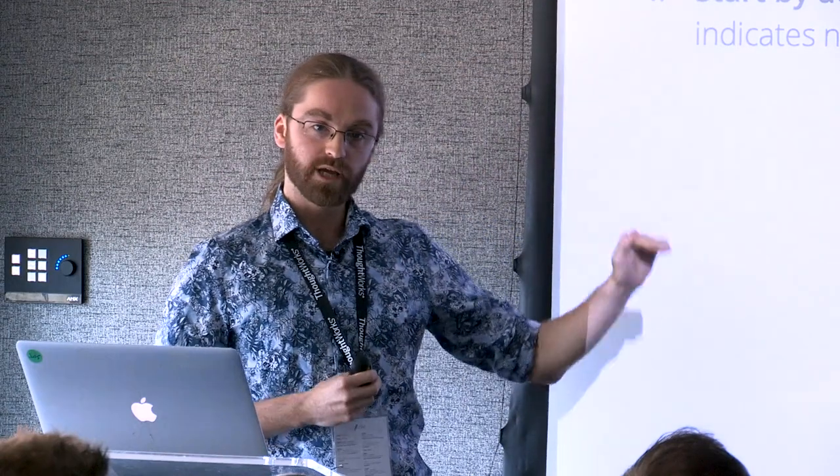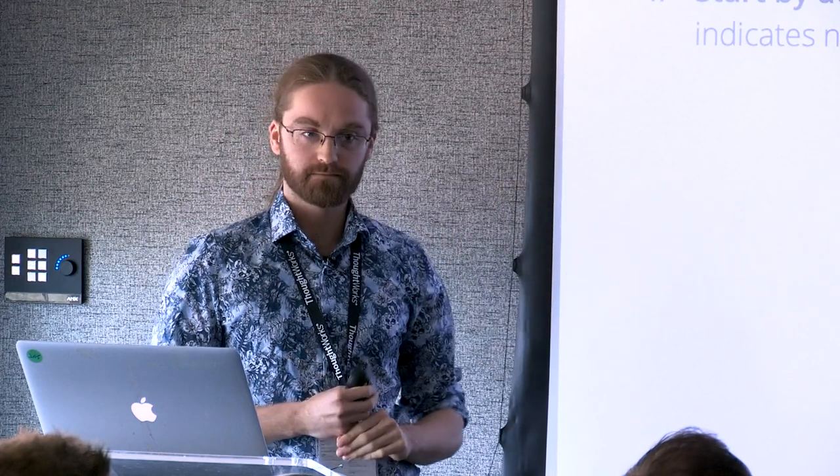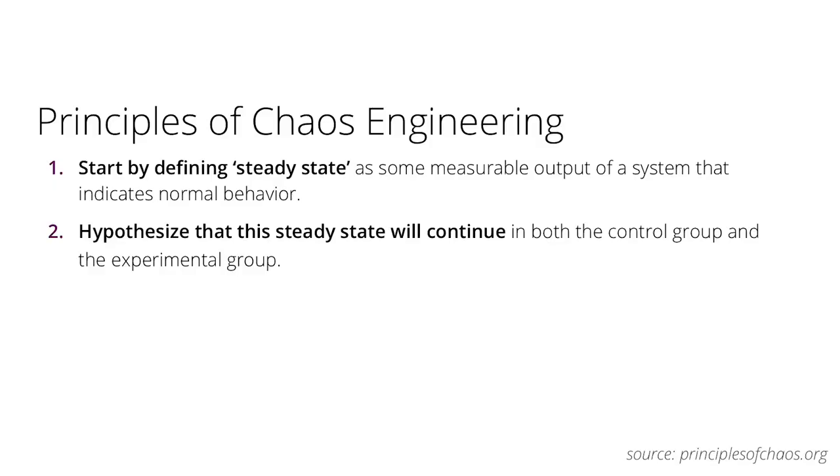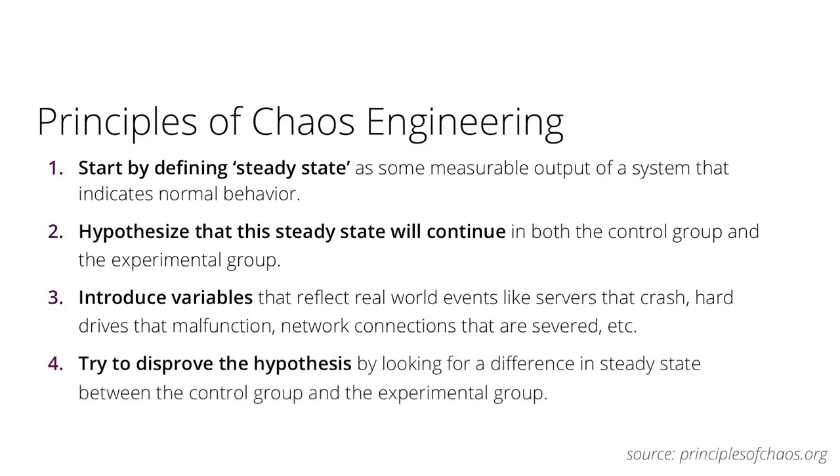They're saying if our system is working correctly, your error count will be below 1%. If it's above that, we are no longer in our steady state—we have failed to be a working system. Then you make a hypothesis: if we have built a resilient system, then whatever we throw at it, it's going to stay in that steady state. Then they start introducing variables—some people call these chaos variables. They're going to start turning things off randomly, injecting network delays, injecting failures.